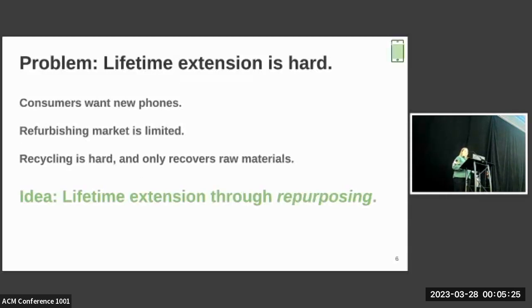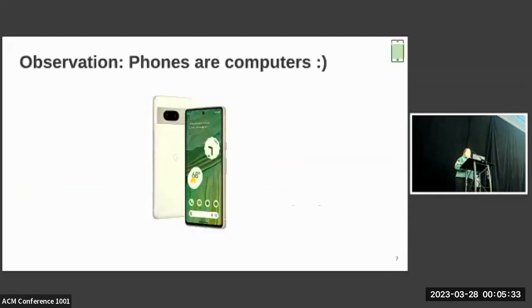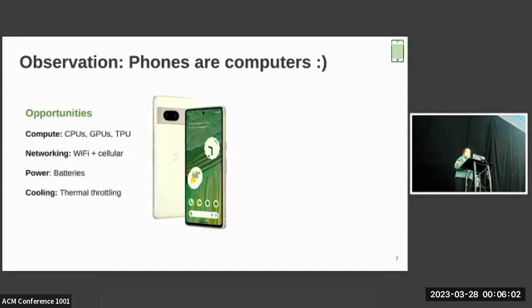For this project, we take a different perspective, and we look at lifetime extension through repurposing, asking ourselves, what else can a phone be other than the obvious? We observe that phones are, after all, nothing more than small computers with some added peripherals. They already give us a lot without us having to do anything. They have several processors, including in more recent devices, specialized accelerators. They have networking capabilities for Wi-Fi and cellular. They have backup power via batteries. They also do an interesting thing called thermal throttling, where as the device gets too warm, it will throttle its CPU to avoid burning the user, which is good news for us if we're thinking about packing a lot of phones into a small space.